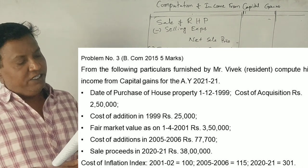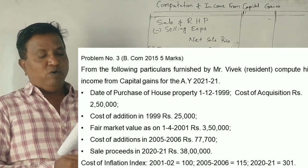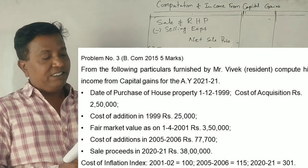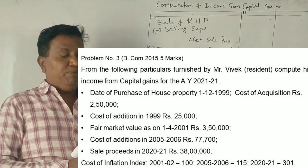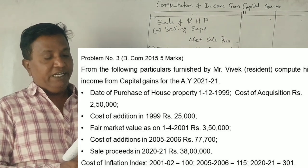Cost of addition is Rs. 25,000 in 1999. Fair market value on 1-4-2001: Rs. 3,50,000. Cost of addition 2005-06: Rs. 77,700. Sale proceeds 2020-21: Rs. 38 lakhs. Inflation index is given.